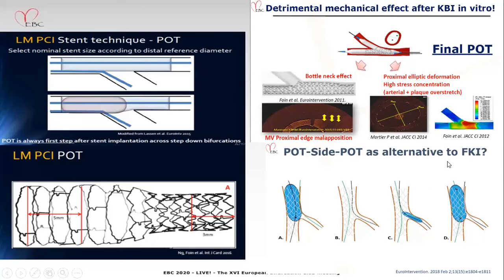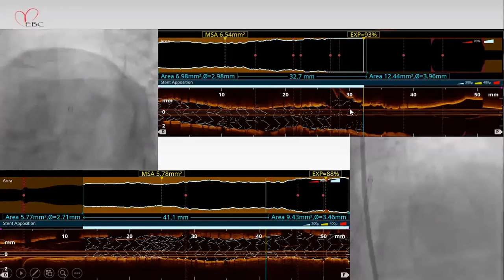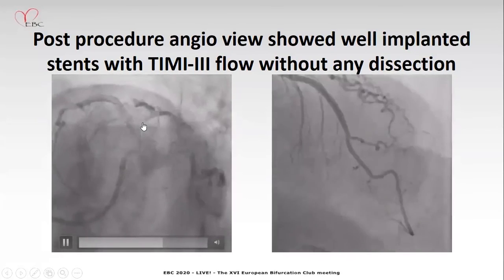An alternative to final kissing balloon is also available. The final result showed LAD flowing very well and the side branch very well perfused. The proximal portion of the stent showed diagonal very well perfused, with expansion of 93%. The distal portion showed expansion of 88%, with the stent nicely expanded and LAD showing good antegrade flow.